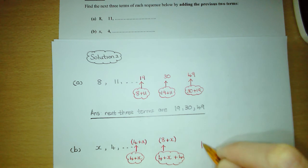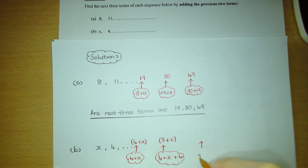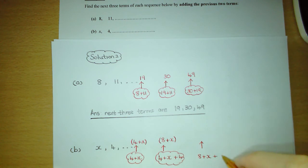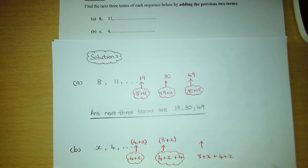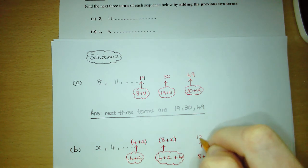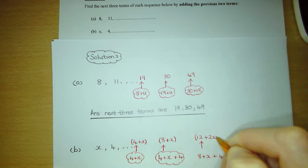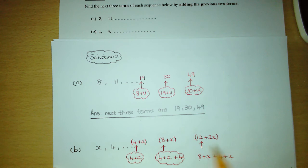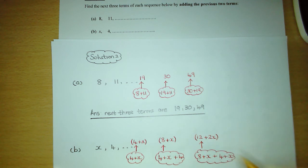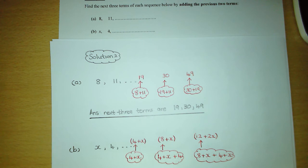To generate the third extra term we add the previous two terms, so we're adding (8 + x) plus (4 + x). Add the numbers: 8 plus 4 gives us 12. Then add the x's: x plus x gives us plus 2x. Put brackets around it to keep the number and the x together. So that gives us (12 + 2x) as the third extra term in the sequence.